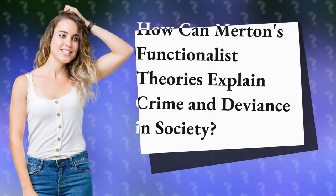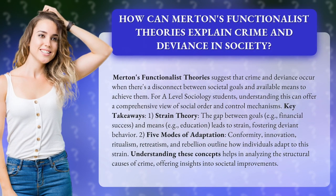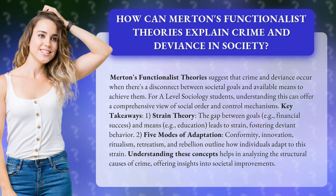How can Merton's functionalist theories explain crime and deviance in society? Merton's functionalist theories suggest that crime and deviance occur when there's a disconnect between societal goals and available means to achieve them. For A-level sociology students, understanding this can offer a comprehensive view of social order and control mechanisms.